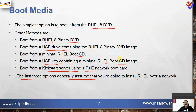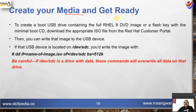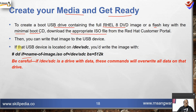To create your media and get ready, create a boot USB drive containing a full RHEL 8 DVD image or a flash key with a minimal boot CD. Download the appropriate ISO file from the Red Hat customer portal as demonstrated in the first lecture. Then write the image to the USB drive. If you are using Linux, use the command: `dd if=<name-of-image>.iso of=/dev/sdc bs=512k`, assuming /dev/sdc is your pen drive. Be careful — if /dev/sdc is a drive with data, this command will overwrite all data on that drive. Make sure your pen drive is empty.